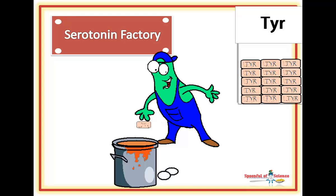TPH mixes tryptophan, iron and tetrahydrobiopterin in the mixing bowl to create hydroxylated tryptophan, which ultimately becomes serotonin.